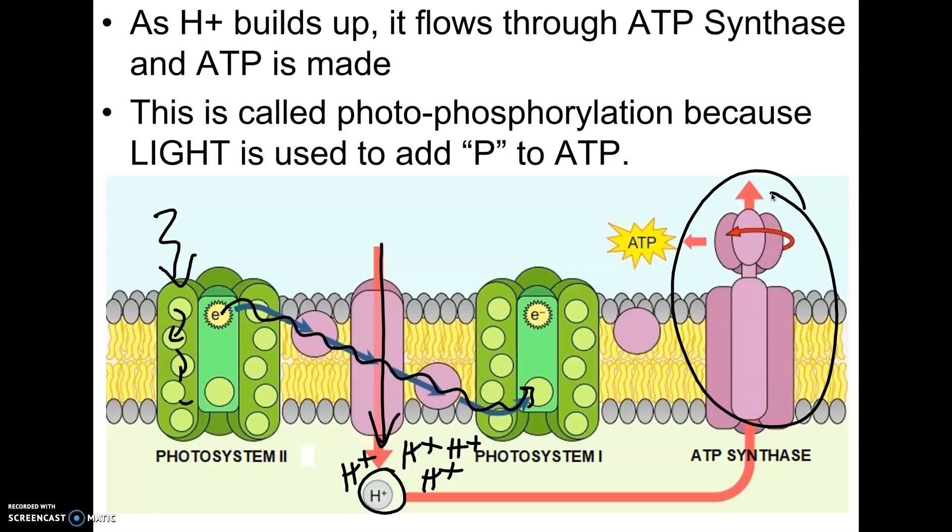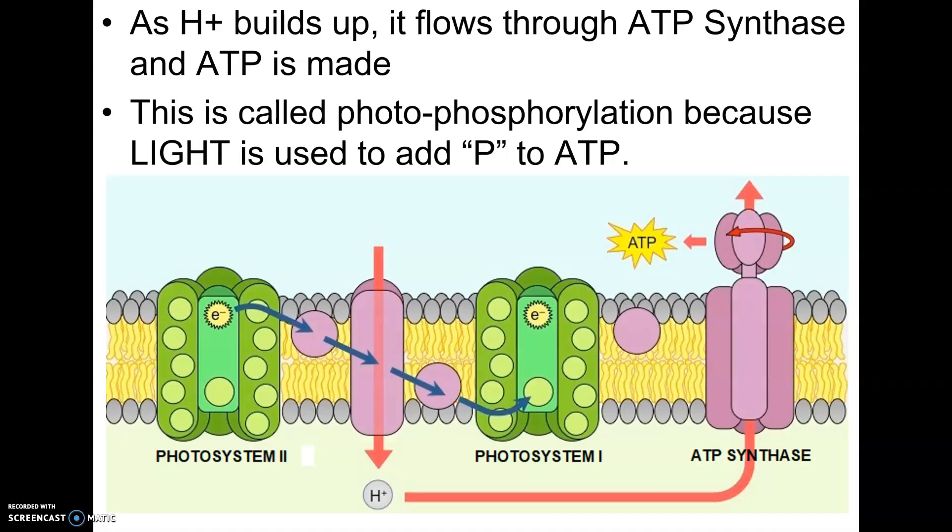It's called ATP synthase. And as the hydrogen ions flow back through from high to low concentrations, it generates ATP. So this enzyme literally builds ATP by the flow of hydrogens. But that flow could only happen because of this electron transport chain from the excited electrons from the light.